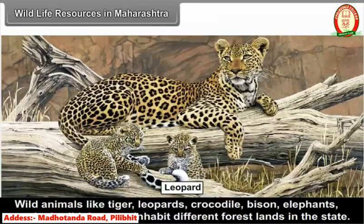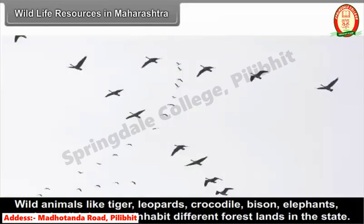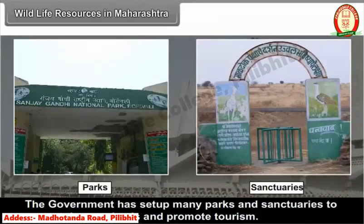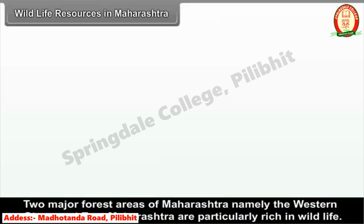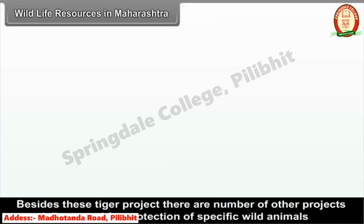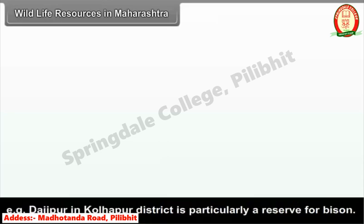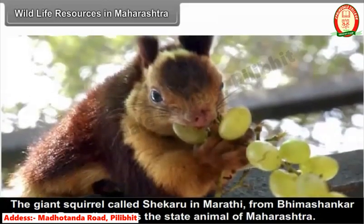Wild animals like tiger, leopards, crocodile, bison, elephants, nilgai, and wild deer inhabit different forest lands in the state. The government has set up many parks and sanctuaries to protect these animals and promote tourism. The two major forest areas — the Western Ghats and East Maharashtra — are particularly rich in wildlife. There are four tiger projects in the state: Melghat, Tadoba, Pench, and Sahyadri. Dajipur in Kolhapur district is a reserve particularly for bison. The giant squirrel called Shekru, from Bhimashankar forest in Pune district, is the state animal of Maharashtra.